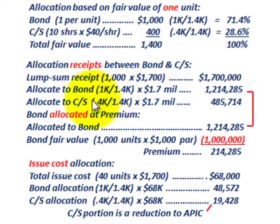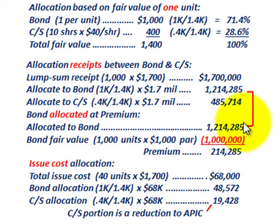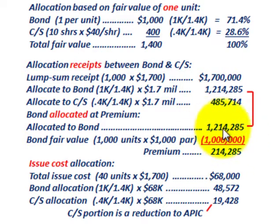For common stock, we take the fractional amount of 0.4 divided by 1.4 times the total receipts of $1.7 million, giving $485,714 allocated to common stock. Now, for the bond allocation — remember, we sold it at par for $1,000 per unit, but because of the proportional allocation, we've allocated it at a premium. The allocated bond amount is $1,214,285 versus the par value of $1,000,000, giving a premium of $214,285.